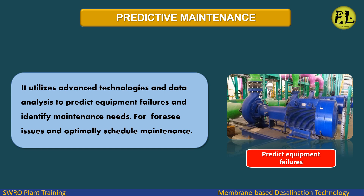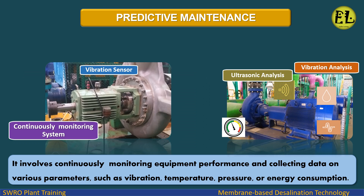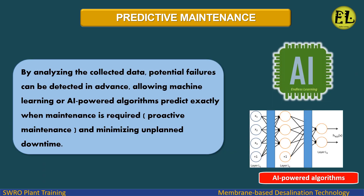PDM utilizes advanced technologies and data analysis to predict equipment failures and foresee issues in order to optimally schedule maintenance. It involves continuously monitoring equipment performance and collecting data on various parameters such as vibration, temperature, pressure, or energy consumption. By analyzing the collected data, potential failures can be detected in advance, allowing machine learning or AI-powered algorithms to predict exactly when maintenance is required, enabling proactive maintenance and minimizing unplanned downtime.